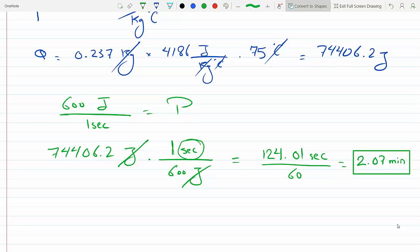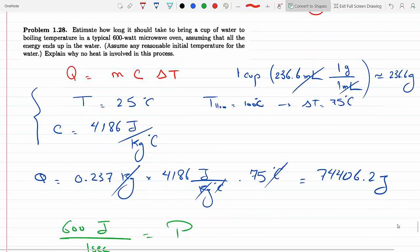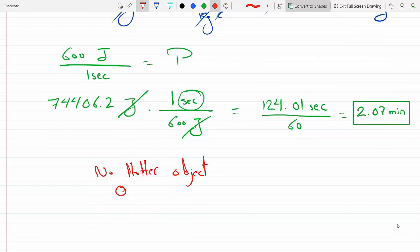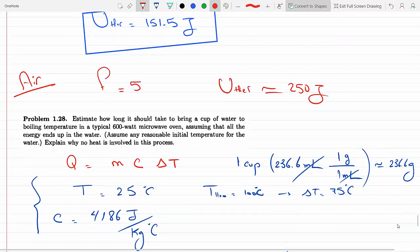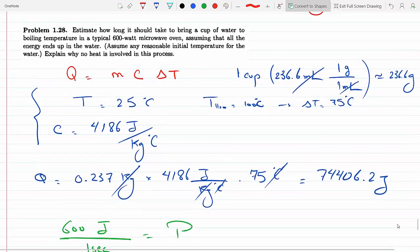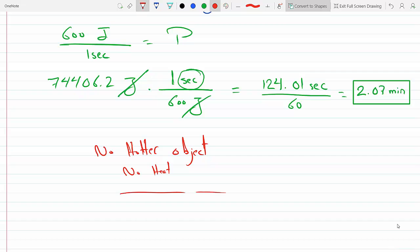So no hotter object relative to water here that's losing the heat to the water. So that's why there's no heat, like the question says—there's no heat involved. So here, a key: no heat. That concludes this question.